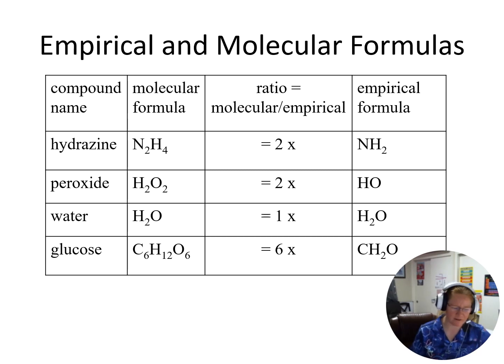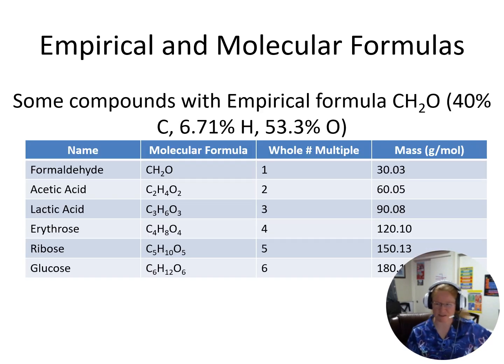There's actually a lot of compounds that have an empirical formula of CH2O. Because when I look at that, I get this percent composition data where I get 40% carbon, 6.71% hydrogen, and 53.3% oxygen. And so a lot of compounds can end up with that same CH2O empirical formula. Formaldehyde, acetic acid, lactic acid, and then a bunch of sugars.